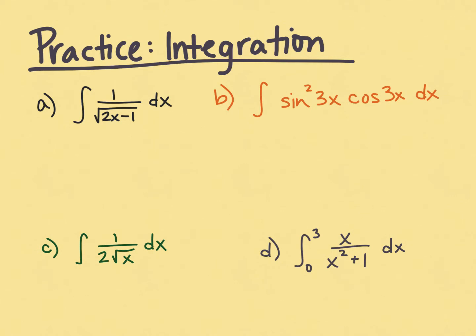When thinking about a u substitution, think a couple steps ahead. Whatever you let u equal — in this case if we let u equal 2x minus 1 — we need to think about whether du is present or if we can make it present through manipulation with numbers, not variables. If u equals 2x minus 1, du would be 2 dx, and we have 1 dx, so we can handle just a constant adjustment. If it had been x squared under here, du would involve 2x, which we don't have, and we can't make a variable appear.